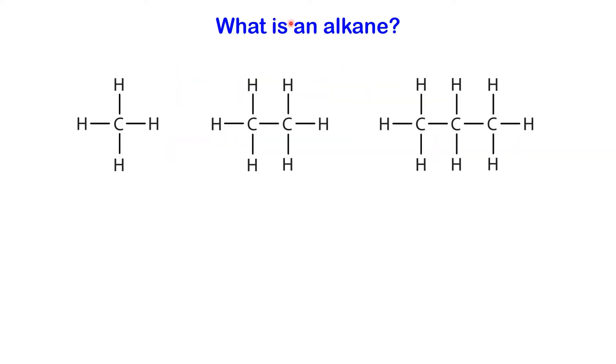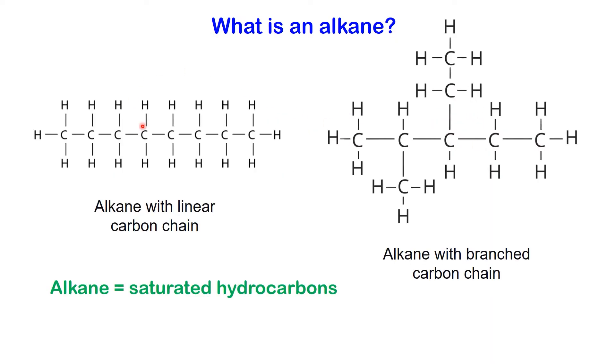What is an alkane? An alkane is a type of hydrocarbon. It consists entirely of hydrogen and carbon atoms. Alkanes are characterized by single bonds between carbon atoms, forming a linear or branched carbon chain. They are also known as saturated hydrocarbons because they contain the maximum number of hydrogen atoms possible given their carbon structure.